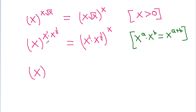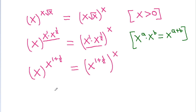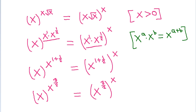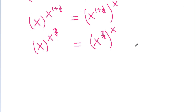The left side becomes x^(x · x^(1/2)) = x^(x^(3/2)). The right side is (x · x^(1/2))^x = (x^(3/2))^x, and using (x^a)^b = x^(a·b), the right side is x^(3x/2).